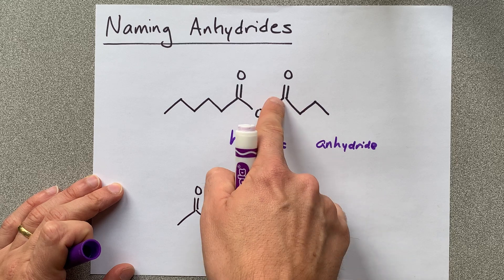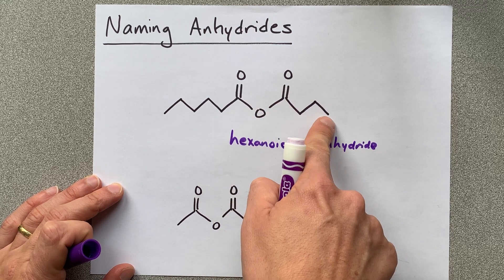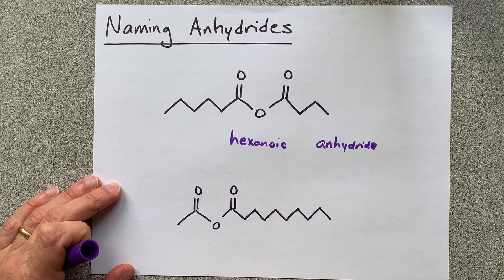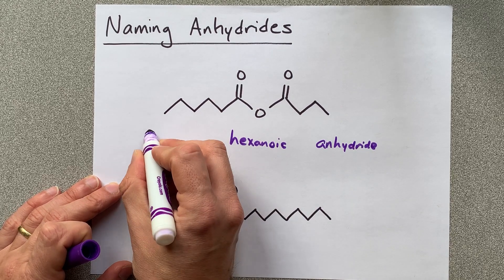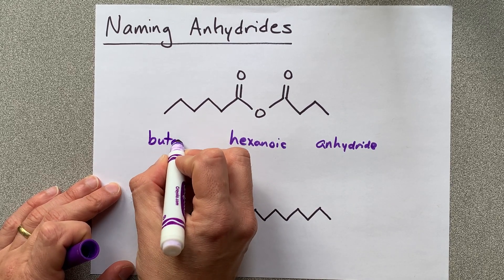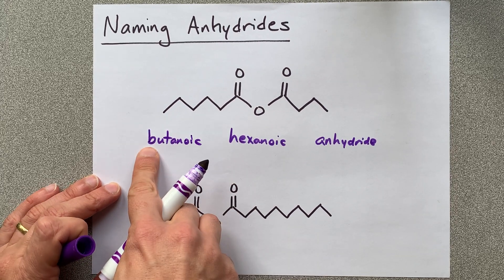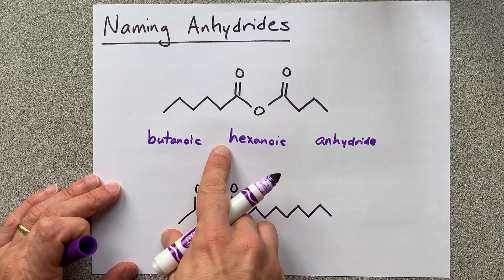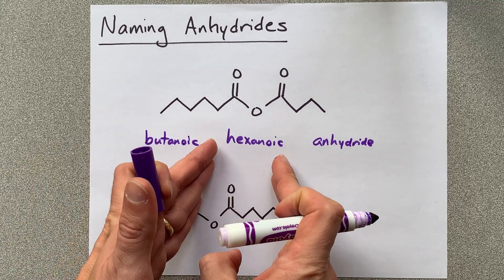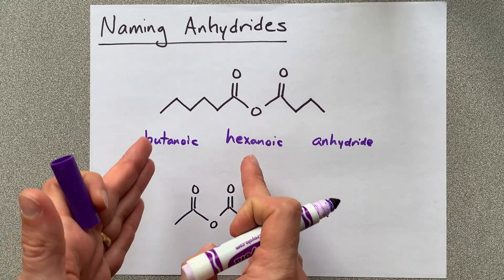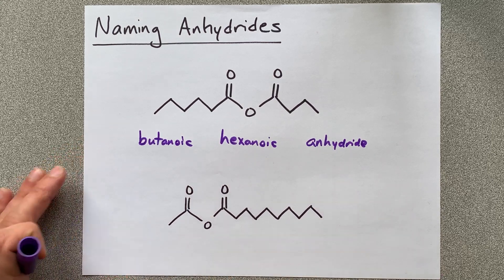The other word is going to be related to the length of this carbon chain: one, two, three, four. Four is bute. Between the first two words, you're supposed to alphabetize them. B comes before H, so we're going to call this butanoic hexanoic anhydride. These are alphabetized, not related to the length of the chain.